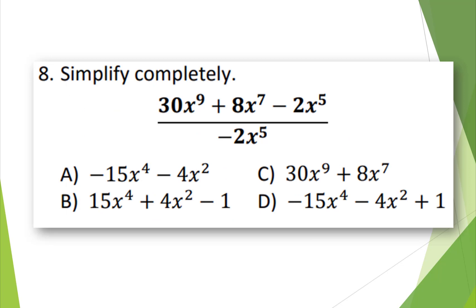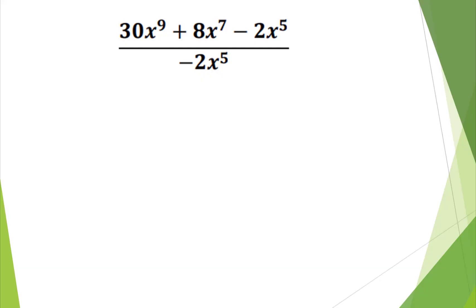Simplify completely: 30x to the 9th plus 8x to the 7th minus 2x to the 5th, divided by negative 2x to the 5th. We're going to break up the fraction, knowing that if you have A plus B divided by C, and C is not equal to 0, it equals A over C plus B over C.